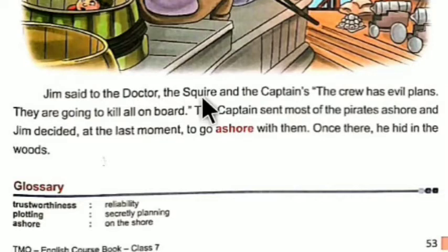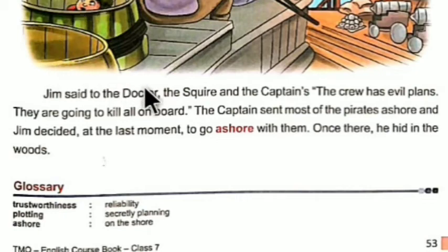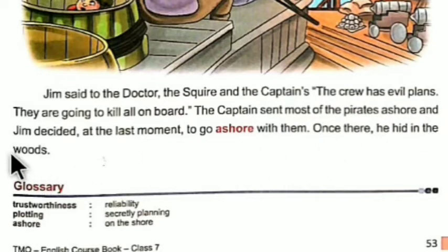Jim said to the doctor, the squire, and the captain that the crew had evil plans and were going to kill everyone on board. Jim Hawkins immediately ran to Dr. Livesey, the squire, and Captain Smollett and informed them of Long John Silver's plan. The captain sent most of the pirates ashore, and Jim decided at the last moment to go ashore with them, hiding in the woods. Ashore means at the edge of the sea.